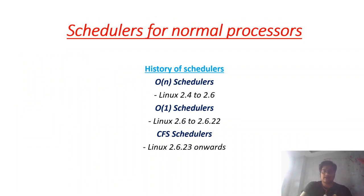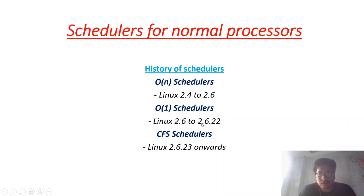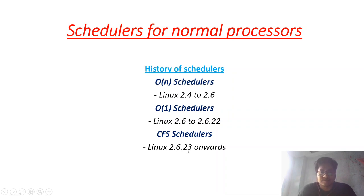There are basically three schedulers in Linux operating system. Initially there was the O(n) scheduler, used from Linux 2.4 to 2.6. Then there was the O(1) scheduler from Linux 2.6 to 2.6.22. After that, there is the Completely Fair Scheduler (CFS) from version 2.6.23 onward.